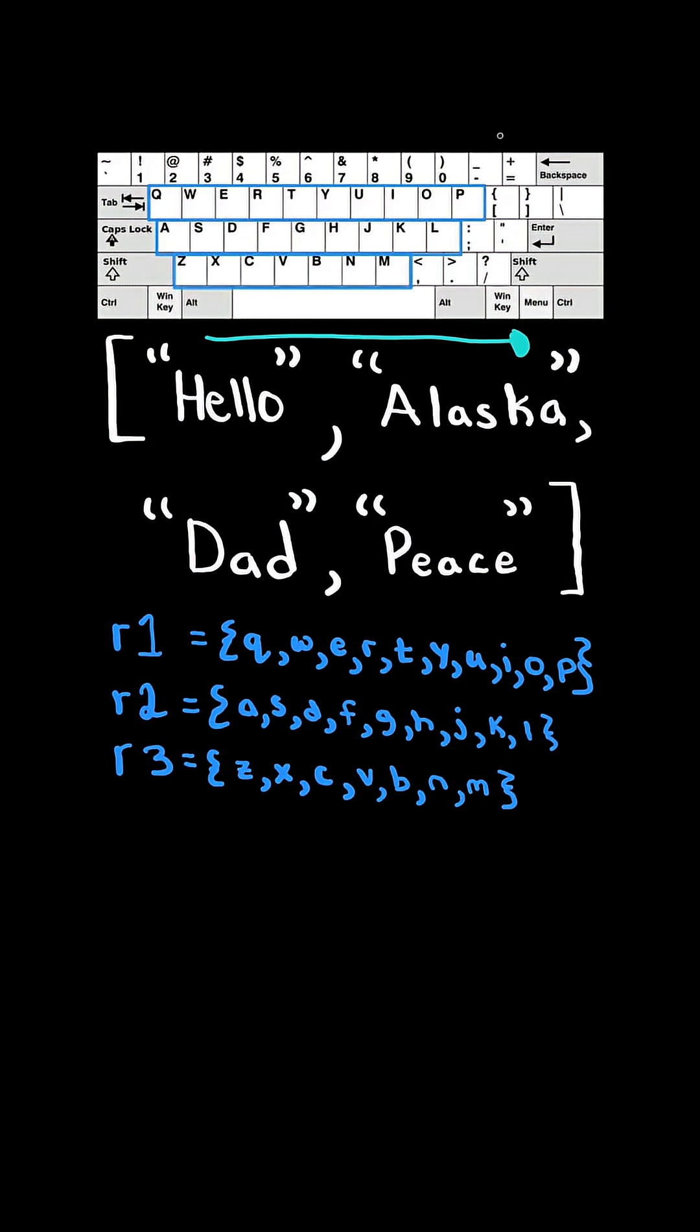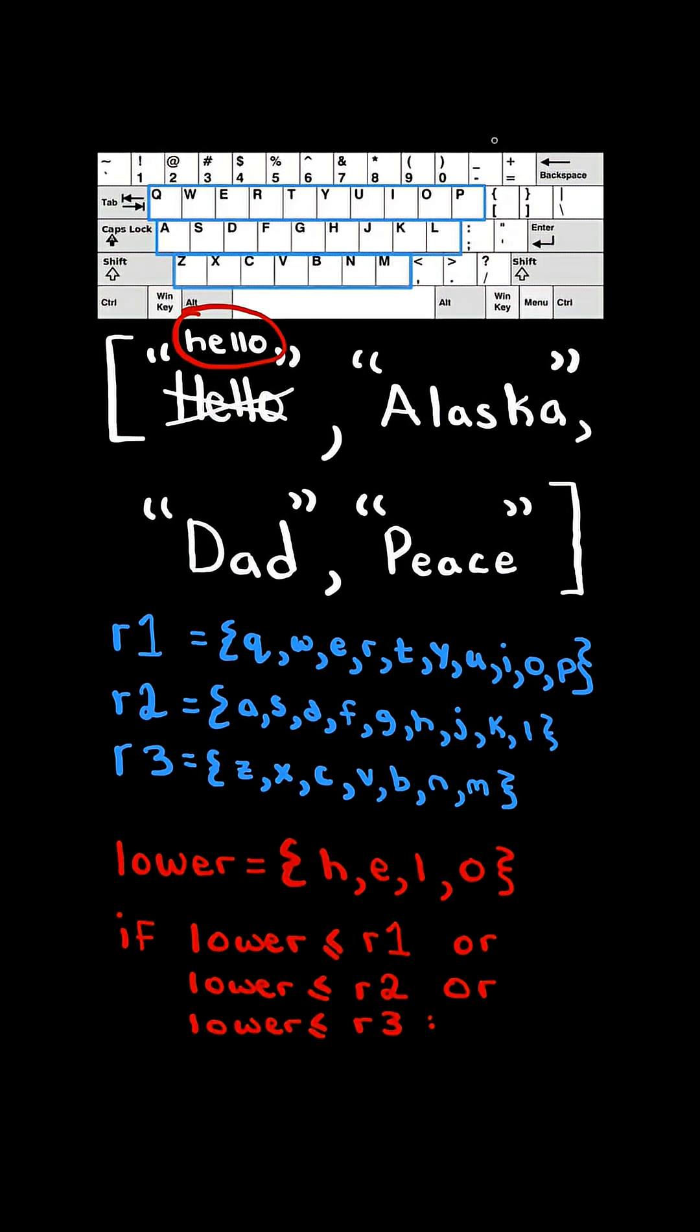We then iterate through the word list. We first convert the word into lowercase. We then convert the lowercase word into a set, and we check if lower is a subset of r1 or r2 or r3. In this case, all the characters of lower are not present in a singular row, so we continue and move on to the next word.